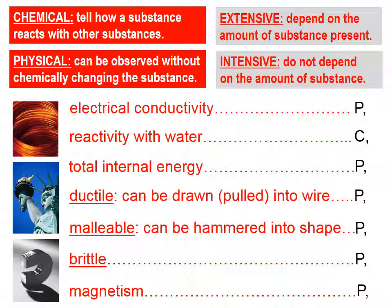Most of the properties that we run into on a daily basis are physical properties. You'll know a chemical property because it will refer to some sort of chemical reaction — it'll use the word react, or reactivity, or corrosion, or combustion. So most properties are going to be physical properties.